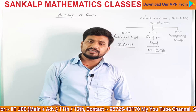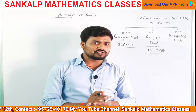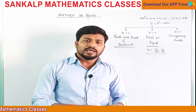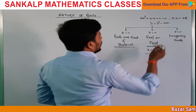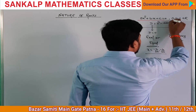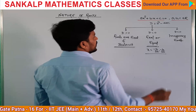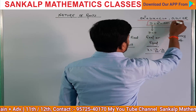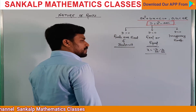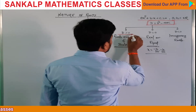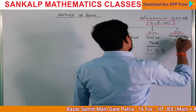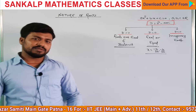ये चीजें आप लोग class 10th में study कर चुके हो, और इसमें मुझे लगता है कि आपको कोई problem नहीं होनी चाहिए। Quadratic equation है ax² + bx + c = 0, condition है ABC real number होनी चाहिए। यह जो discriminant है — D greater than 0 पहली, equal to 0 दूसरी, और D less than 0 तीसरी। Less than 0 में roots imaginary होता है।